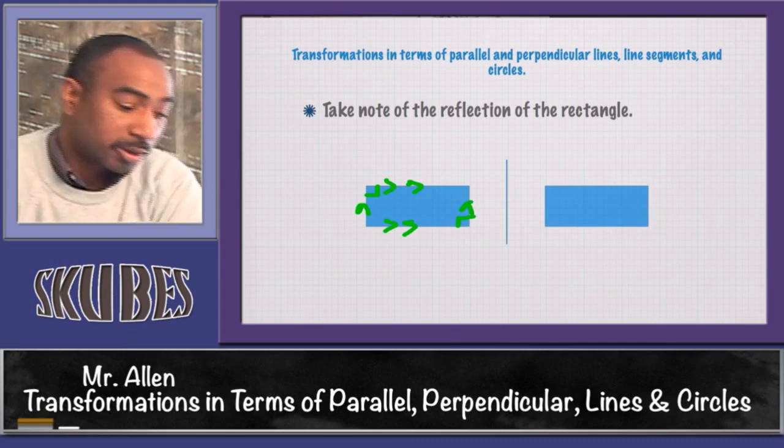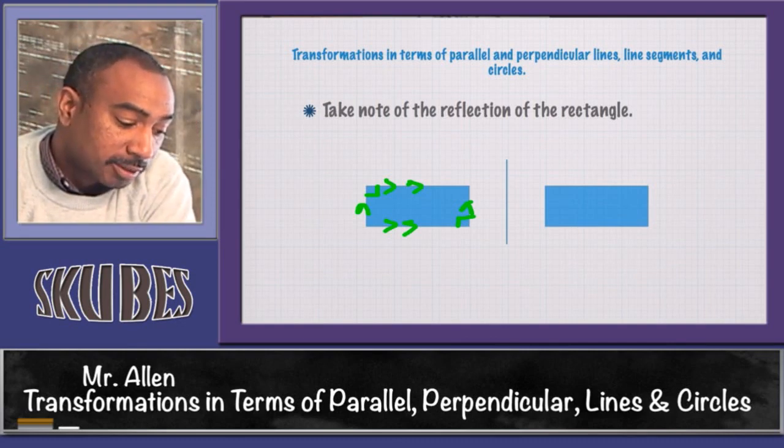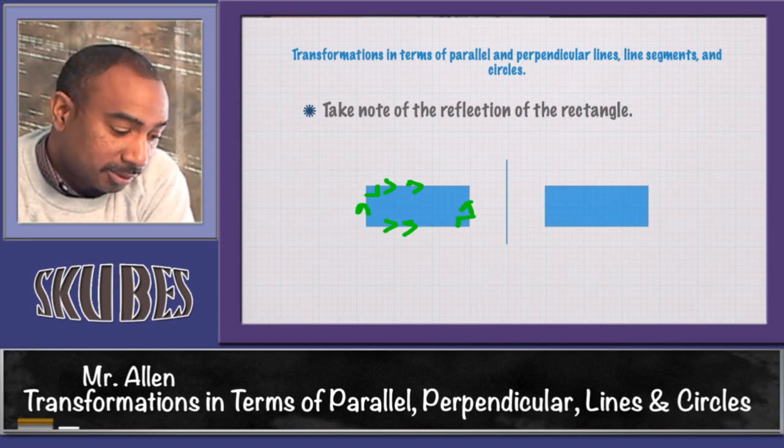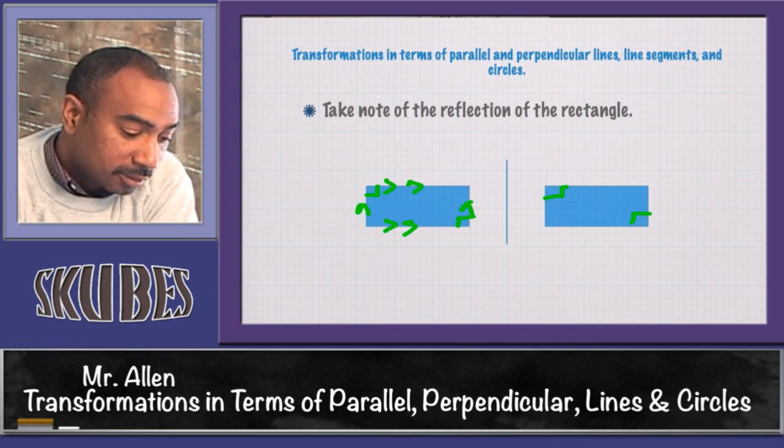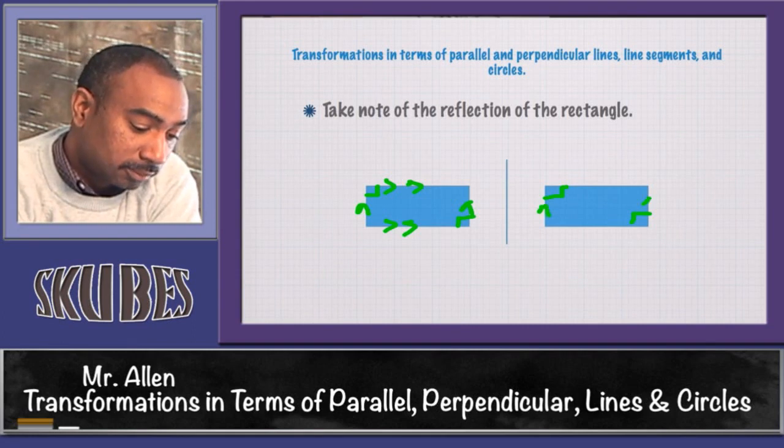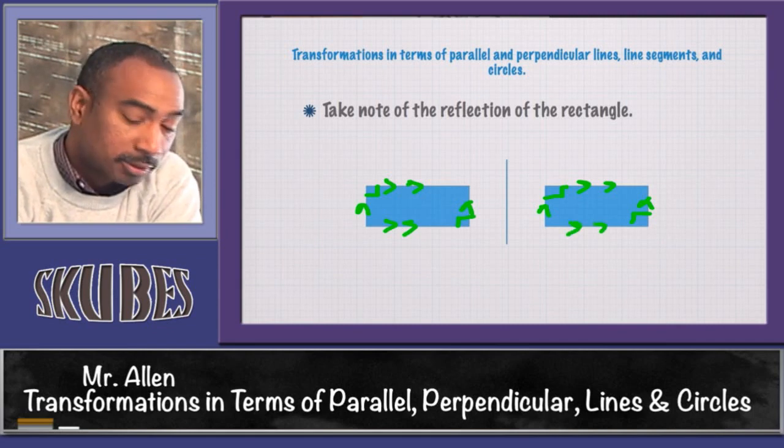The sides, the length and width, form a right angle. If you reflect it, you're going to get the flip of that image, but the angles are going to be the same, it'll still be a right angle, and the lengths of the sides are going to stay the same. They'll still be parallel to each other, so it doesn't change anything about the properties of parallel or perpendicular lines.